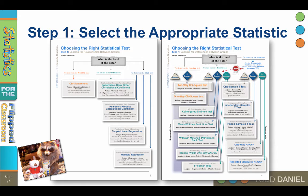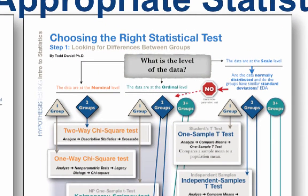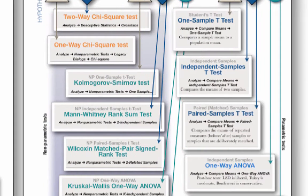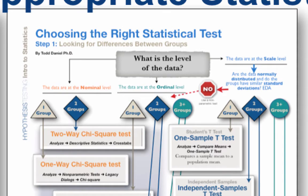You will use the diagrams in the bear handout to select which statistical test to use. You'll choose the test based on whether you're looking for differences between groups or relationships within groups. For differences, you'll use t-tests or an ANOVA. For relationships, you would use correlation and regression. You'll consider the level of the data — nominal data will be analyzed with a chi-square, and ordinal data or highly skewed scale level data might require a non-parametric test.